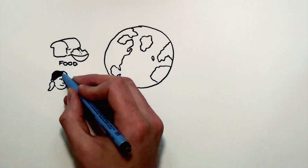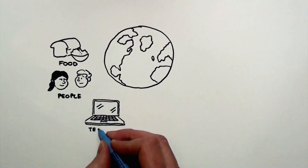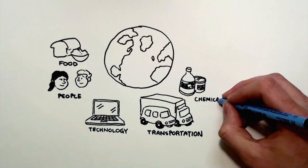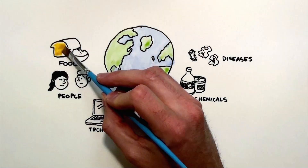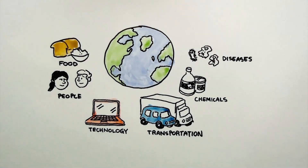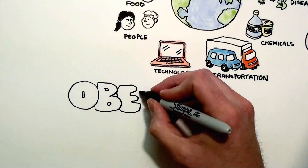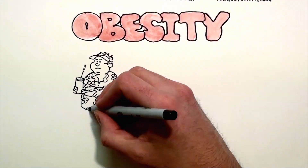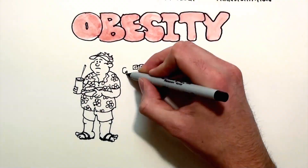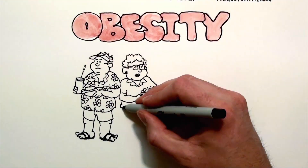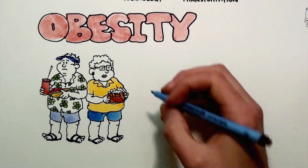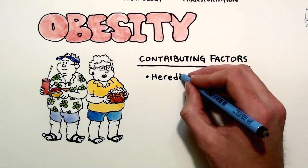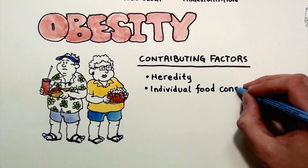The world in which we live and work is complex and rapidly changing, and so are the factors that determine our health. Consider obesity, for example. There are many contributing factors, including heredity, individual food consumption, personal activity levels, social influence, food production, etc.